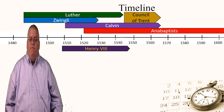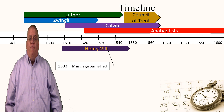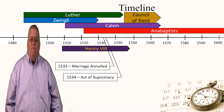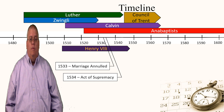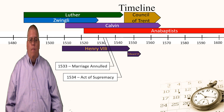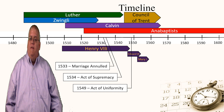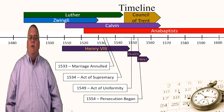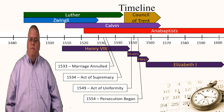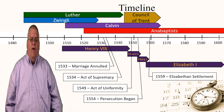Henry VIII reigned over England from 1509 through 1547. In 1533, he annulled his first marriage. In 1534, the Act of Supremacy was passed, declaring Henry the head of the English Church, not the Pope. Henry's son, Edward VI, had a short reign from 1547 through 1553. In 1549, the Act of Uniformity made the Book of Common Prayer the rule for English churches. Mary Tudor reigned from 1553 through 1558, and she began to persecute Protestants in 1554. Then Elizabeth I reigned from 1558 through 1603, and the Elizabethan Settlement went into effect in 1559.